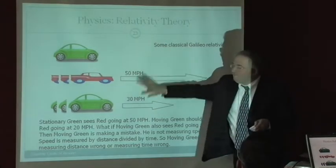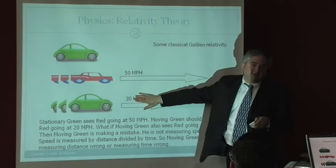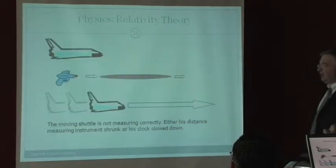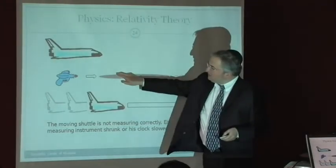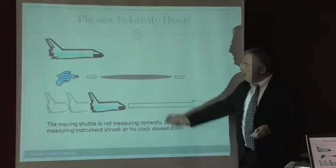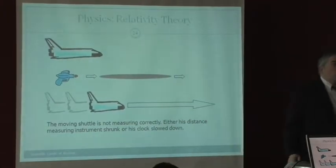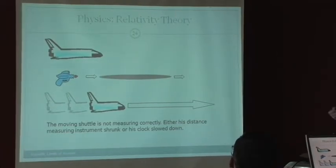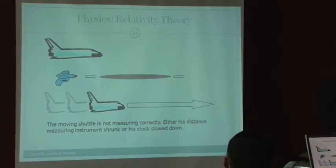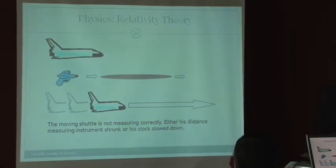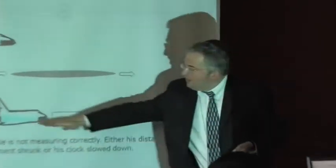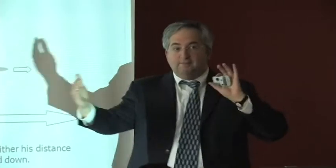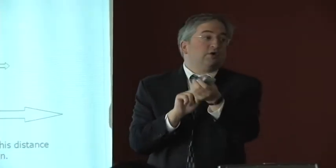So again, if this was a mistake, if he did say he sees him at 50 miles an hour, he's making a mistake, and we're just analyzing where is this mistake going at. If he says he sees the light at the same rate as he sees the light, he's measuring wrong. One of two things. Either his measuring rod is smaller, shrunk, or his time is messed up. And that's exactly what special relativity says.